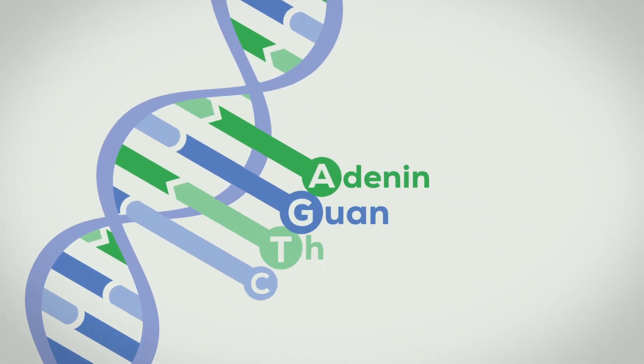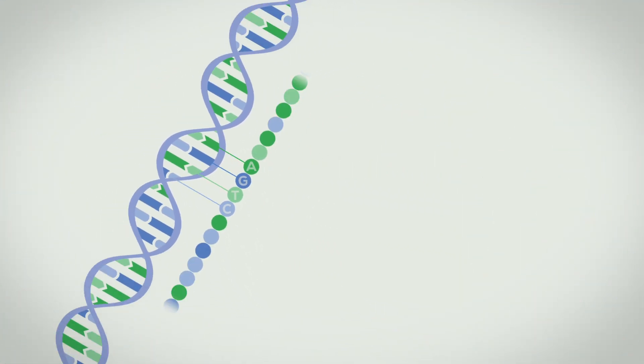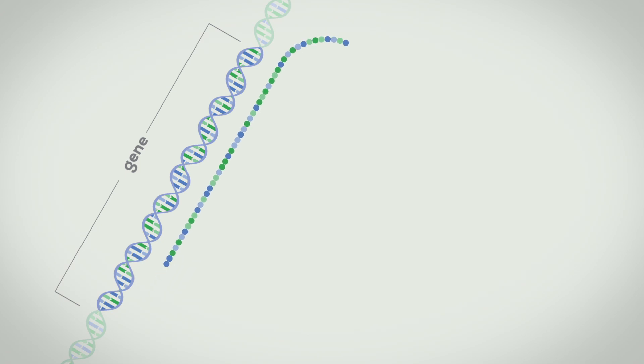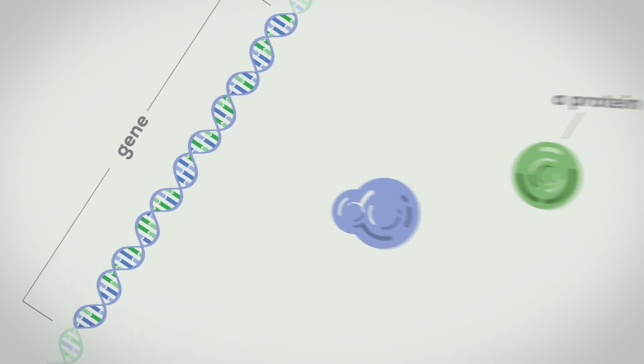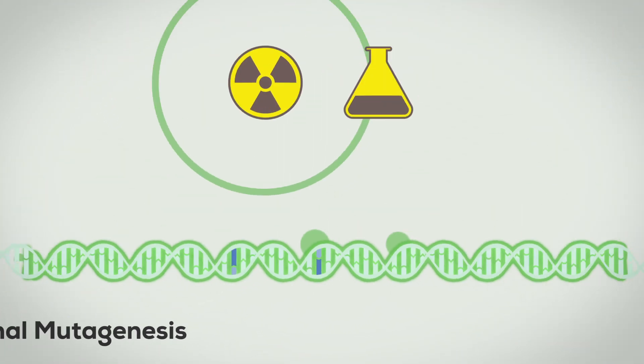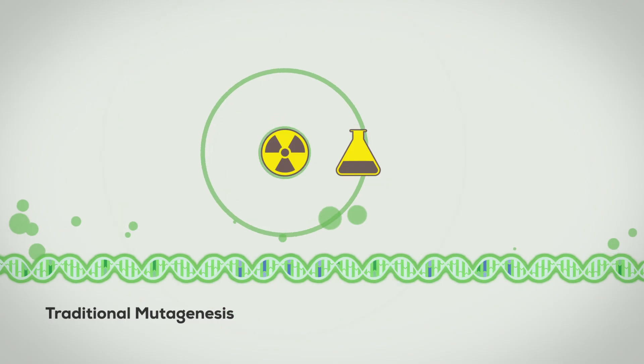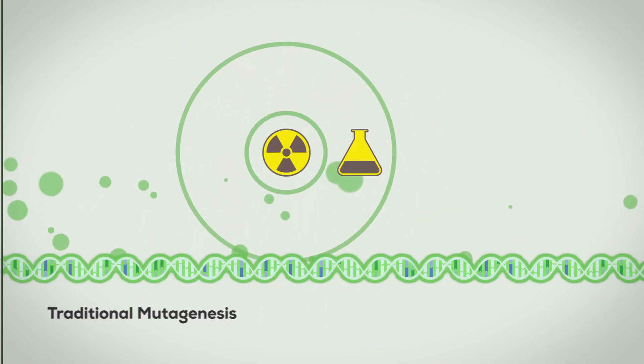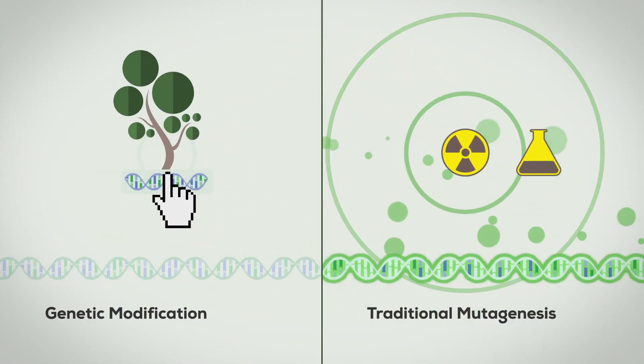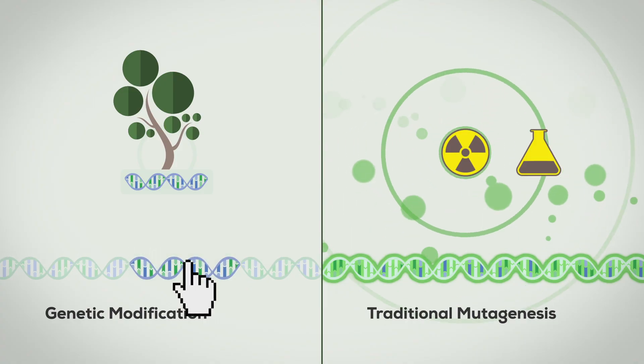DNA is a code containing only 4 letters and genes are simply lots of these letters in a sequence. A specific gene is an instruction to build a specific protein and it's the proteins that make life happen. We frequently use mutagenesis to artificially change the letters in our crops genomes hoping to improve them. But today genetic modification takes the randomness out of it, giving us any crops we want.